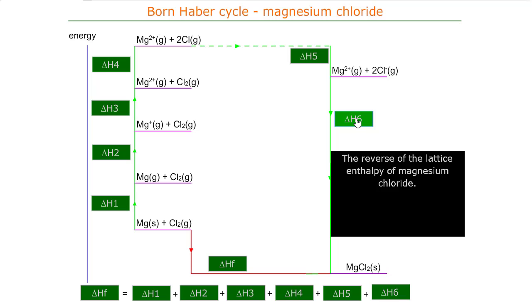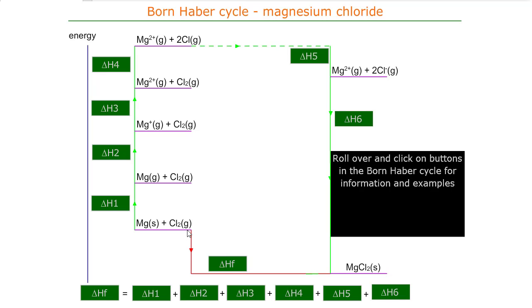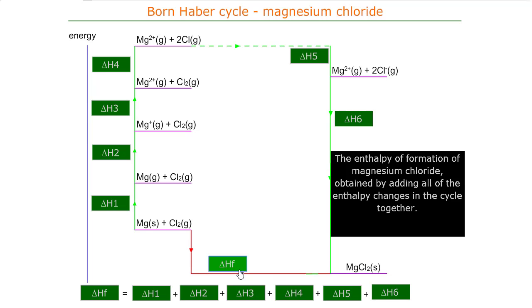And simply, whichever way around we go around the circle, if we want delta HF, what we have to add in—delta HF is from magnesium solid and chlorine to magnesium chloride—well we must go all the way around the circle. So it's delta H1 plus delta H2 plus delta H3 plus delta H4 plus delta H5 plus delta H6 will equal the enthalpy of formation of magnesium chloride.